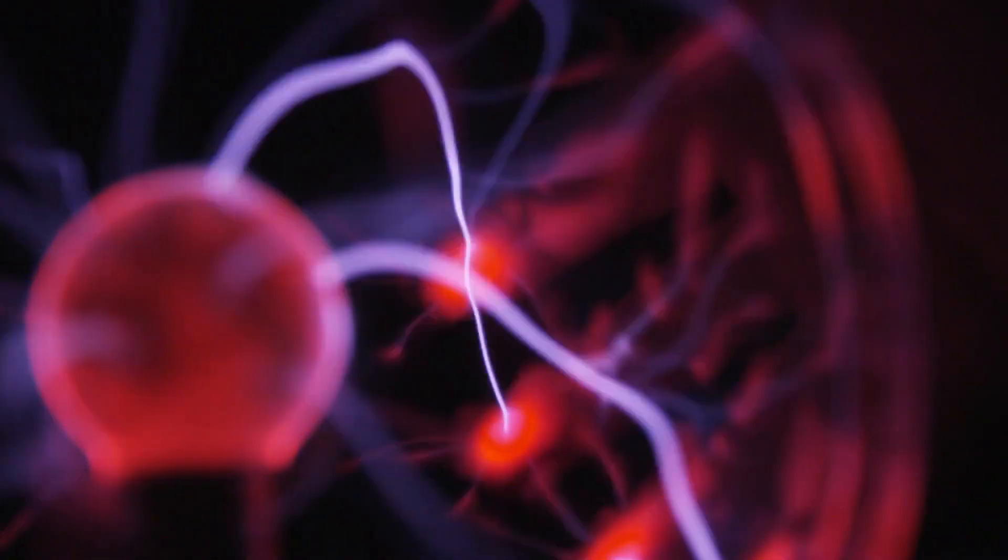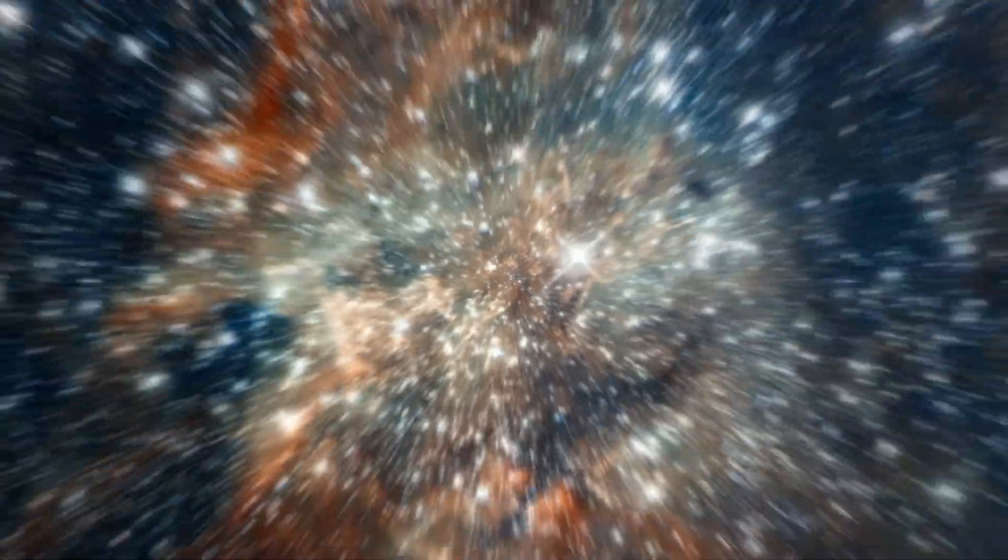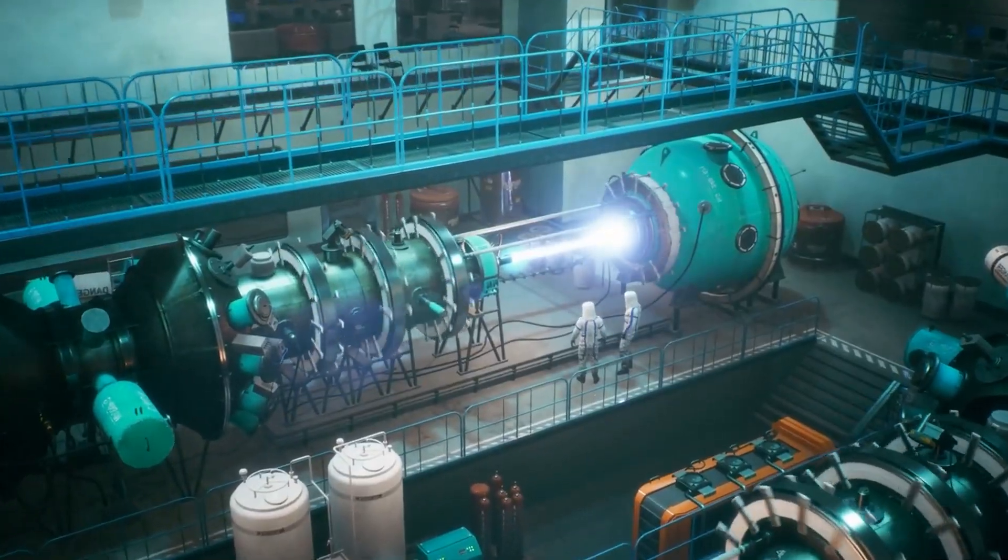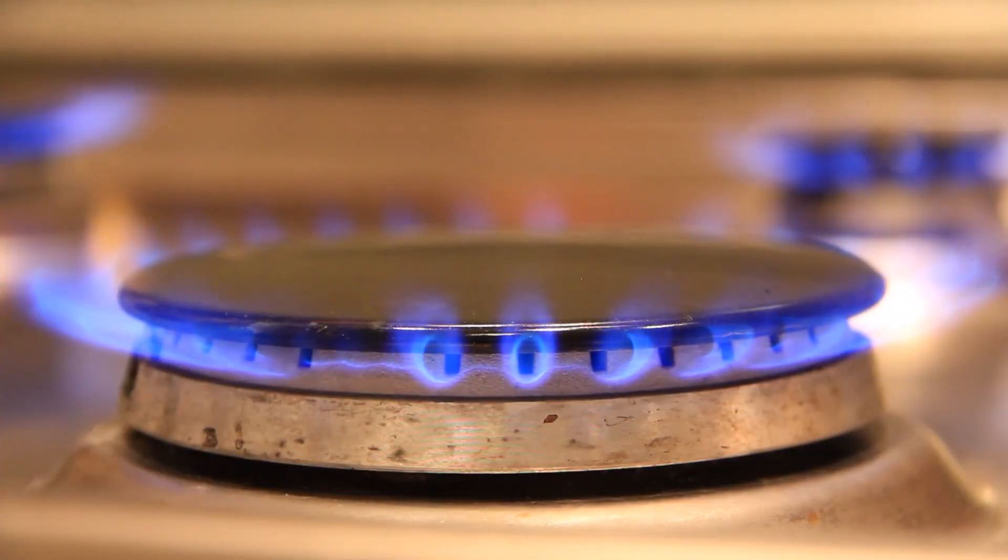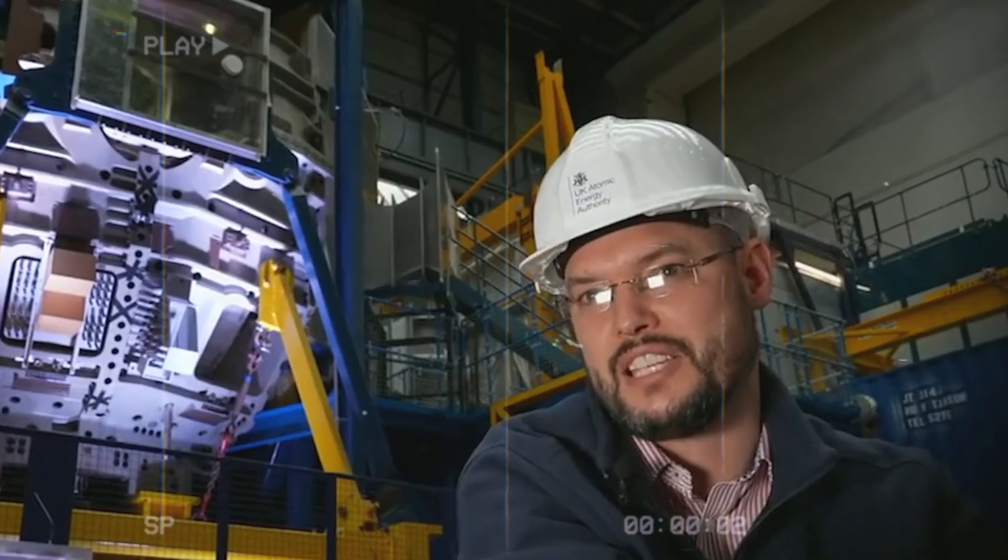Plasma happens naturally when molecules get super hot or when there's a strong electric field. You can find it in space in things like the sun and stars, but we can also make it ourselves by heating up a neutral gas or using a strong electric field, often with microwaves or lasers. What we've managed to demonstrate inside the jet is that we can create a mini-sun, the right kind of mini-sun, hold it there for a sustained period and get really good performance levels.